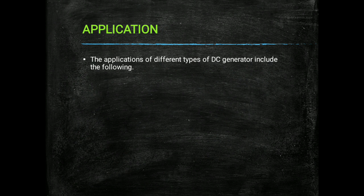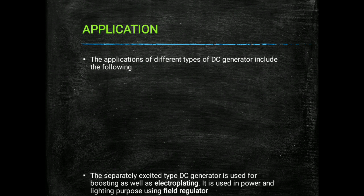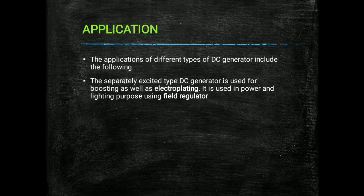The next slide is the applications of DC generators. The separately excited DC generator — where the field is excited by an external DC source — is used for boosting, that is, boosting up of voltage, and for electroplating. It is also used for power and lighting purposes using field regulators.